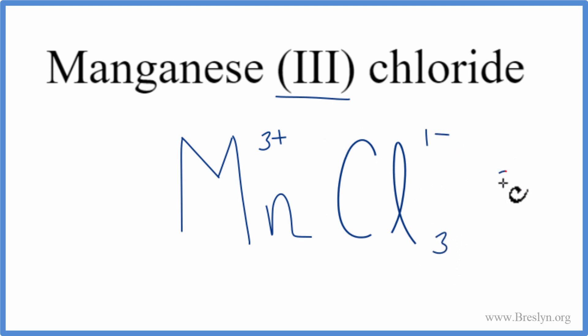3 times the 1-, that's 3-. 1 times the 3+, 3+, 3+, and 3-. That adds up to 0. The net charge is 0. And we're done.